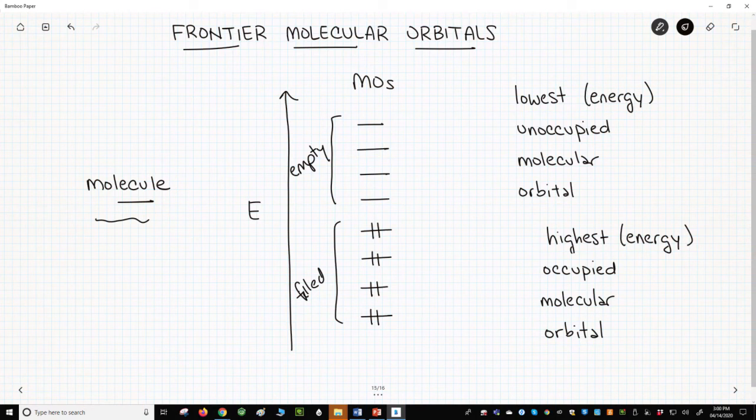The highest occupied molecular orbital determines the nucleophilicity or basicity of the molecule. This is the orbital through which the molecule donates electron density.